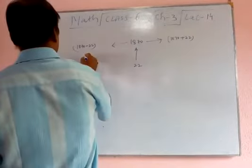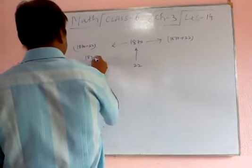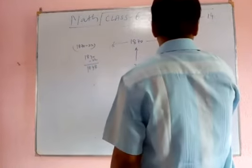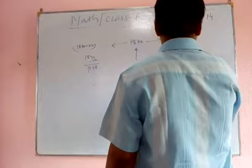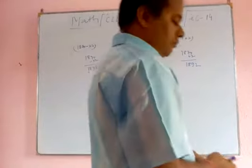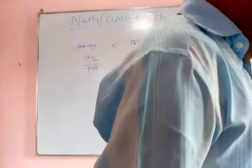So that number will be 1870 minus 22, which is 1848, and 1870 plus 22, which is 1892. These are the two numbers nearest to 1870.